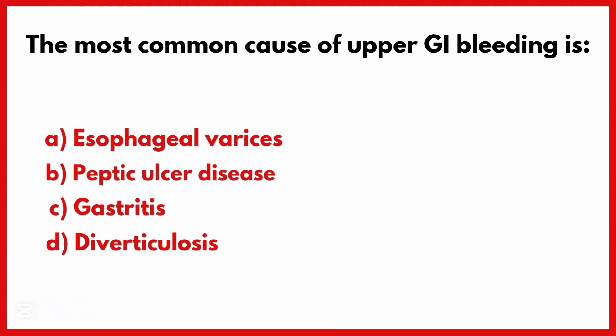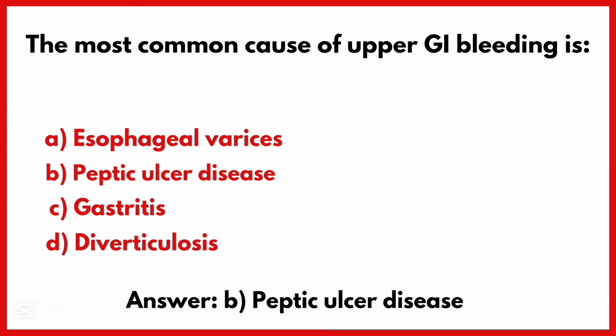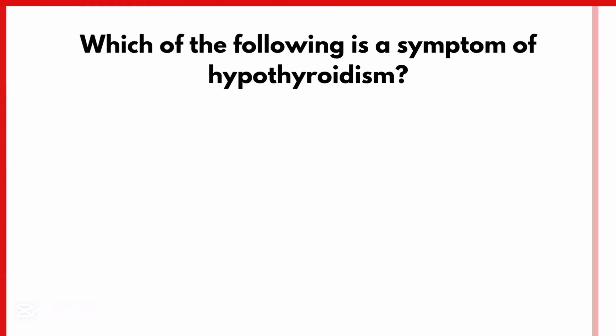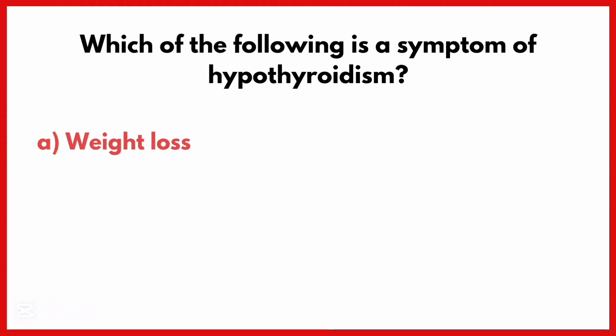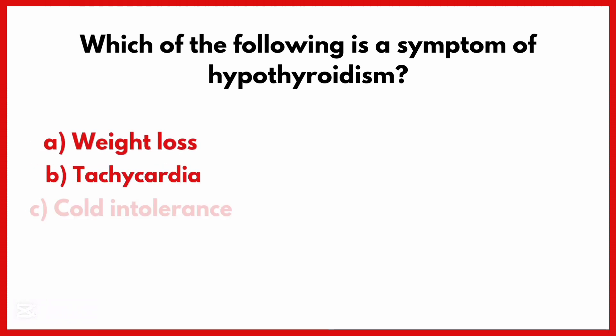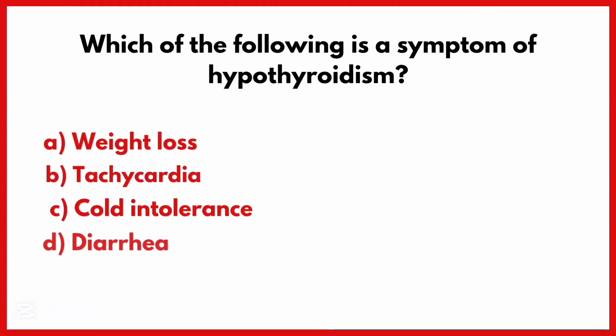The most common cause of upper GI bleeding is — the correct answer is option B: Peptic ulcer disease.